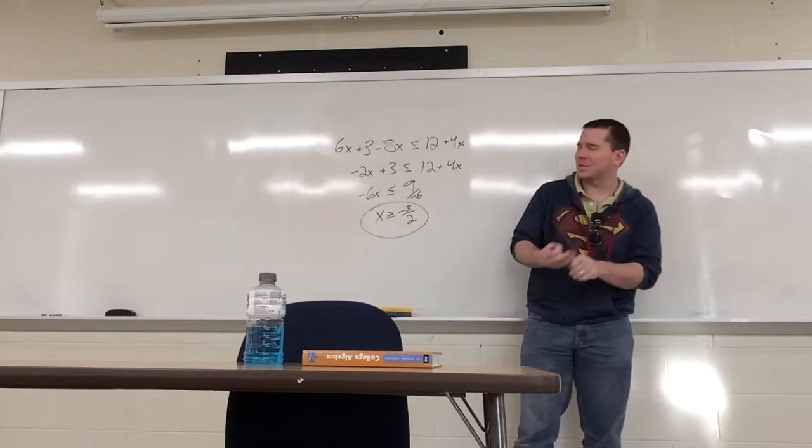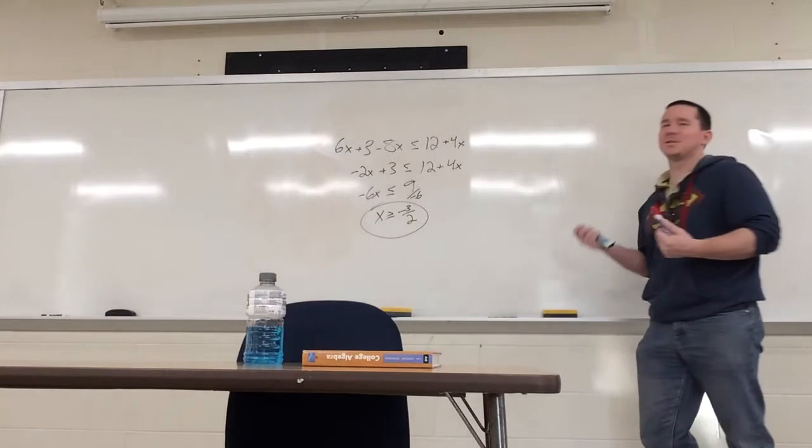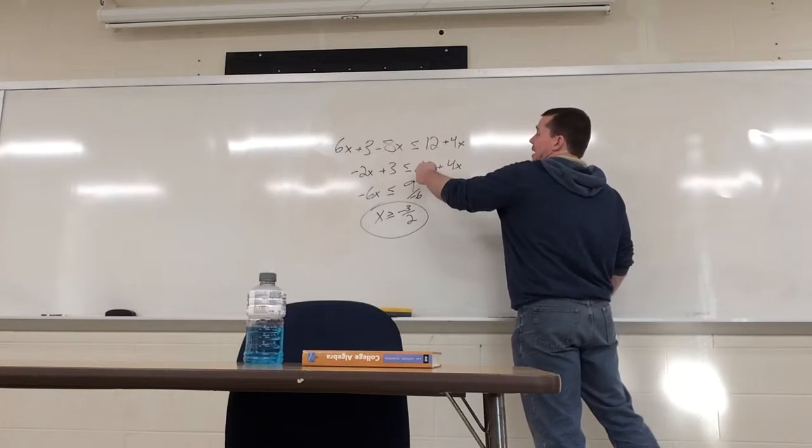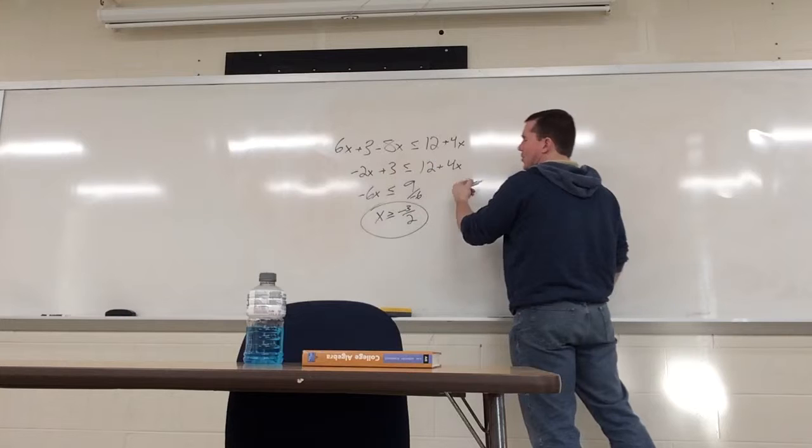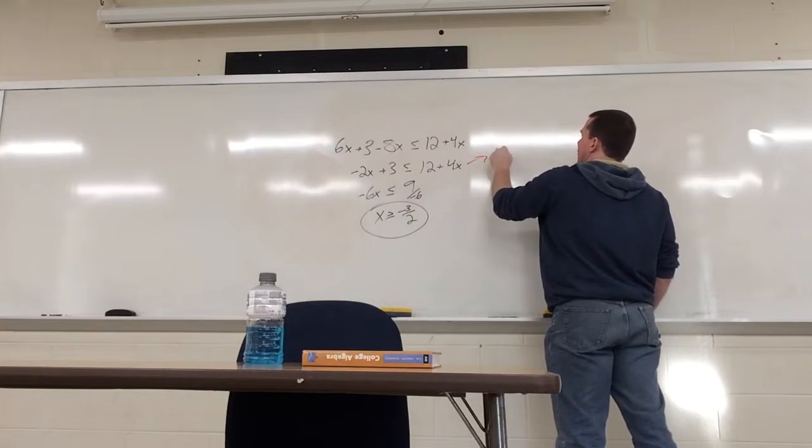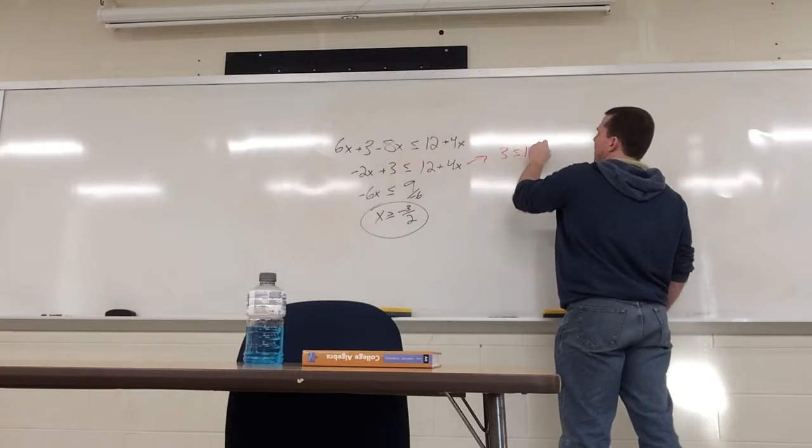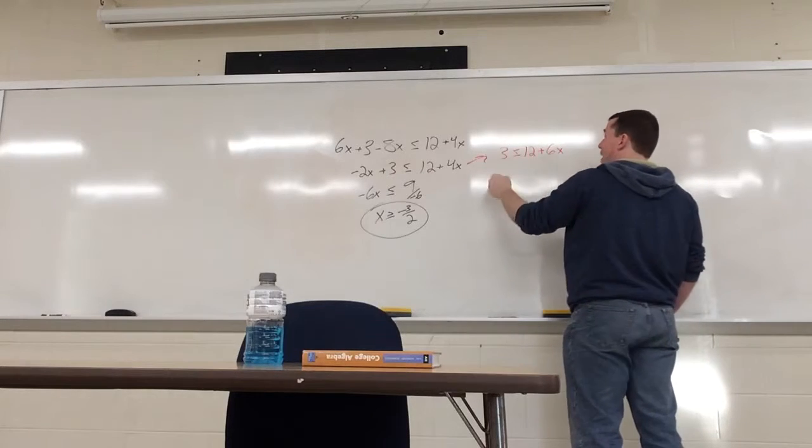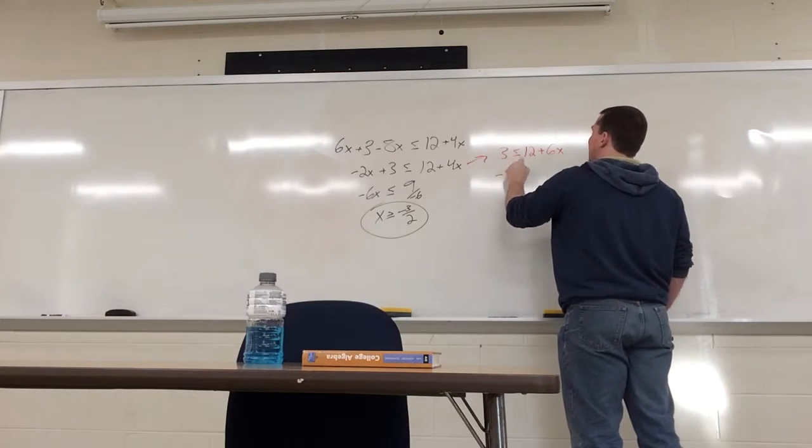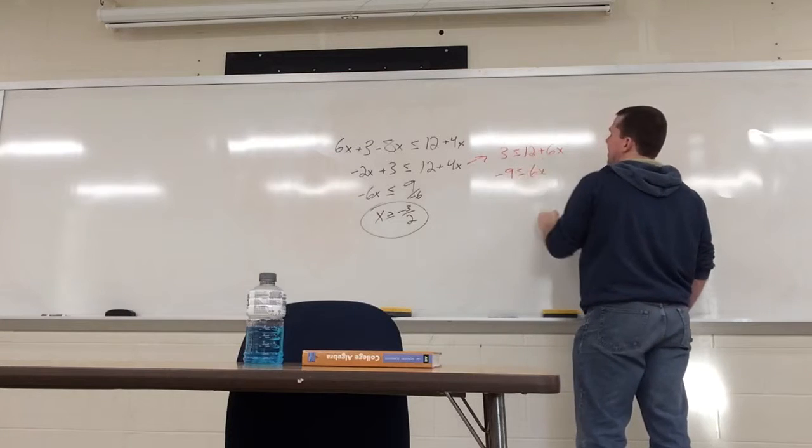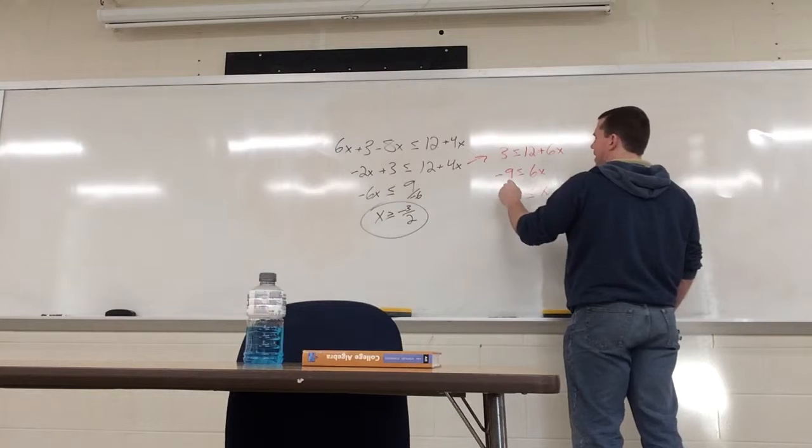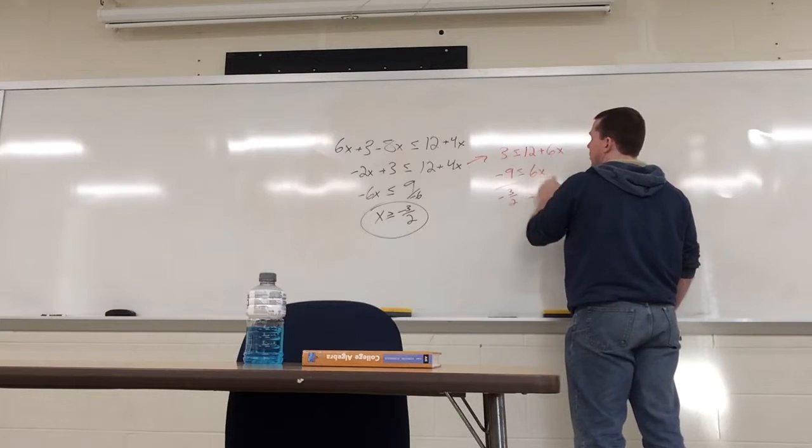One thing I will actually point out as far as this goes, because I'm not all that much into form as opposed to understanding. In theory, right here, you could have just added the 2x over. Then you would get 3 is less than or equal to 12 plus 4x plus 2x is 6x. Subtract the 12. 3 minus 12 is negative 9 is less than or equal to 6x. And then divide the 6, so it's not negative. x is greater than or equal to negative 9 over 6, which is negative 3 over 2.